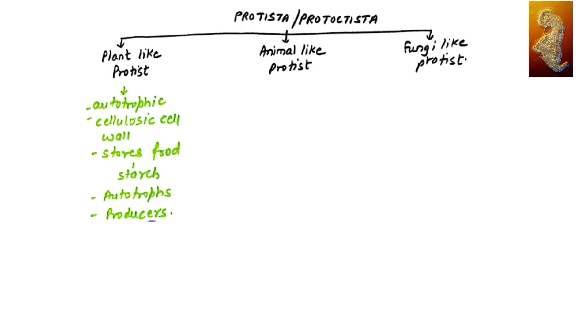In plant-like protists, since they are plants, they have to be autotrophic. They prepare their own food. They have cellulosic cell wall, and the stored food material will always be starch as they do photosynthesis. They are producers. Plant-like protists include different groups like chrysophytes, dinoflagellates, diatoms, and desmids, which are also known as golden algae.